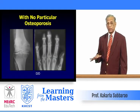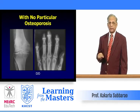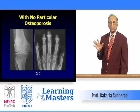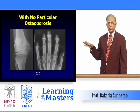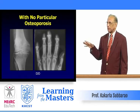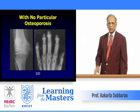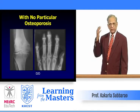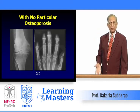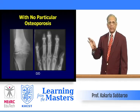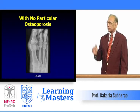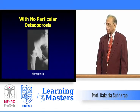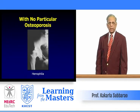Absence of periarticular osteoporosis is also diagnostically important. In degenerative joint disease or osteoarthritis, you do not find periarticular osteoporosis — for example, in the distal interphalangeal joints of the hand or the knee. In elderly patients generalized osteoporosis may exist, but it is not restricted to the periarticular region. In gout, basically no periarticular osteoporosis is found. In hemophilia, periarticular osteoporosis is also absent.